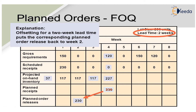Based on the gross requirements, scheduled receipts, and on-hand inventory, we get the total work to be completed in four weeks: 227. The planned receipts is 230, and since the lead time is two weeks, we extend by two weeks, giving us week four for the ordered plan — allowing us to find by what time the activity will be completed.